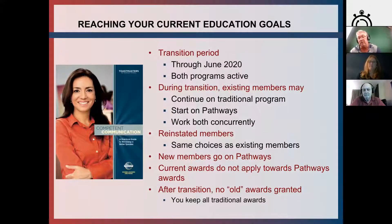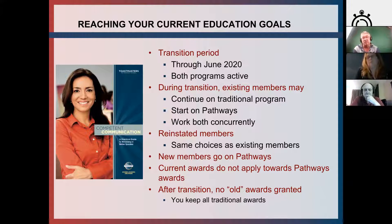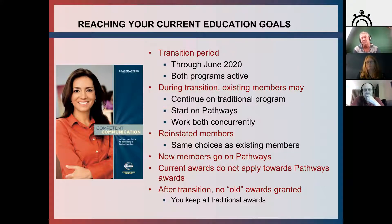We have a transition period. At this present time, they're hoping that everybody will be on Pathways by the end of June 2020. During the transition period, we can run side by side — doing the old traditional program to complete our existing manuals, and also running on Pathways concurrently. Reinstated members have the same choice as existing members. For new members after rollout, it's straight onto Pathways. Current awards in the old system do not go towards Pathways because they are two different educational systems. After the transition period, no old awards would be granted, but you get to keep your old traditional awards.